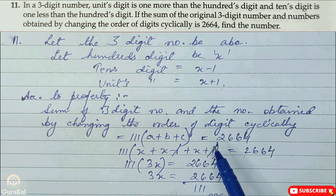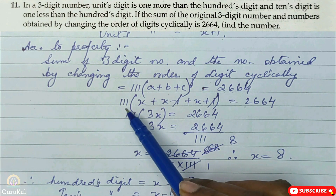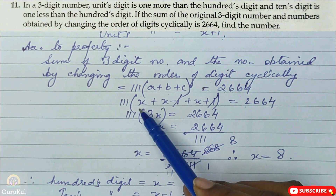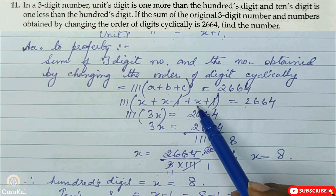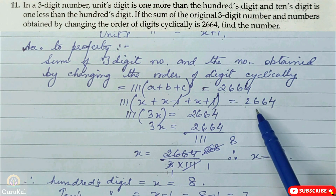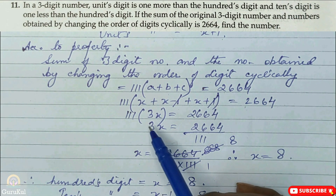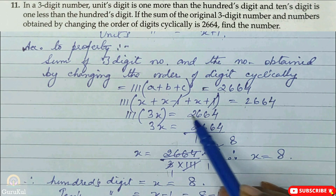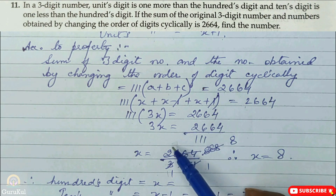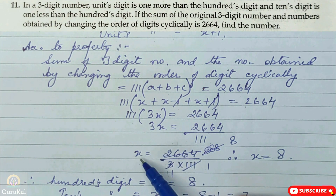This sum is given as 2664. So 111(A plus B plus C) = 2664. Substituting values: 111(X plus (X minus 1) plus (X plus 1)) = 2664. The plus 1 and minus 1 cancel, leaving 111(3X) = 2664. So 3X = 2664 divided by 111. Similarly X = 2664 divided by (111 × 3).